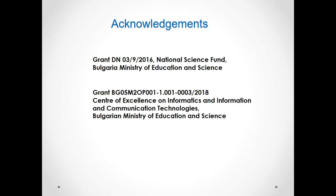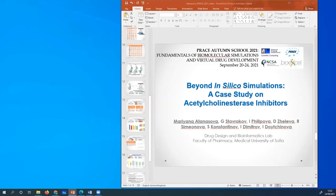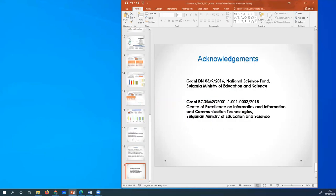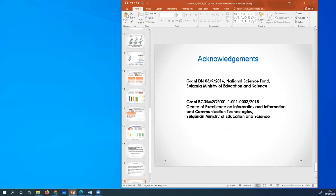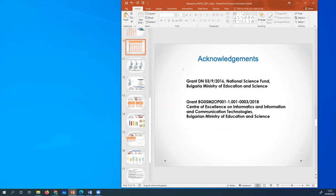Question from the chat: how were clearance and plasma protein binding calculated? These were calculated using models previously derived in our lab. Here are the papers in which these pharmacokinetic parameter models were published. Could you put the references in the chat? Yes, I'll copy them.